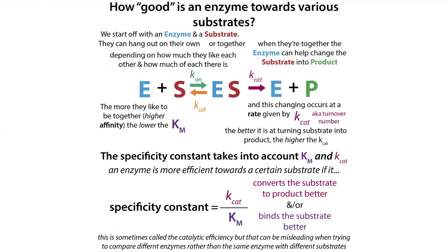If you divide your Kcat by your Km, that's your specificity constant — or catalytic efficiency. But remember, calling it catalytic efficiency is a bit misleading because it's better thought of as a specificity constant: it tells you more about how good an enzyme is for one substrate compared to another, rather than how good one enzyme is compared to another enzyme.